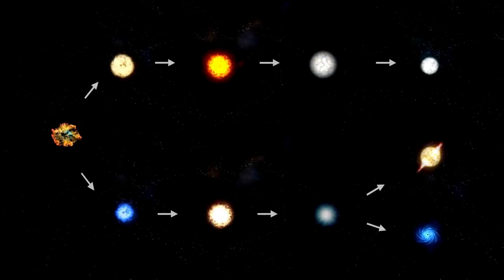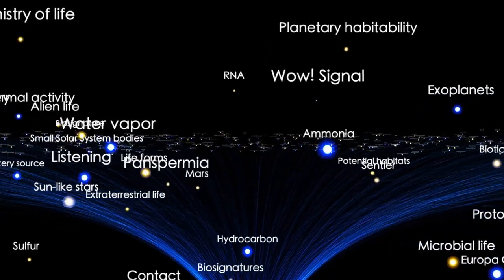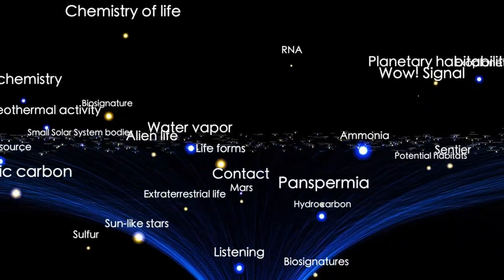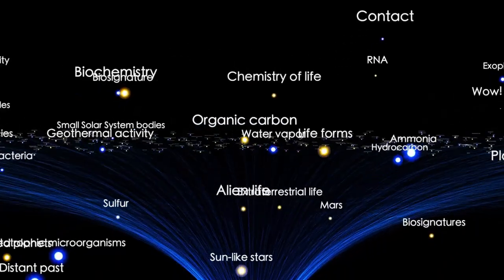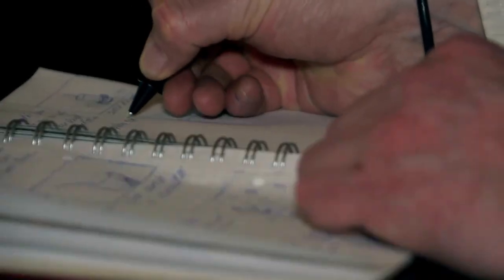Before the light of the explosion reaches us, Earth will be bathed in a silent storm of neutrinos, tiny, nearly massless particles that will escape from the collapsing core and reach us before any visible signs of the supernova appear.